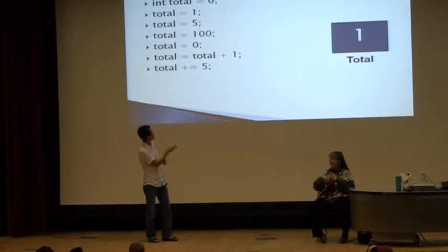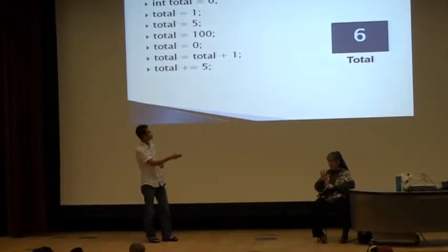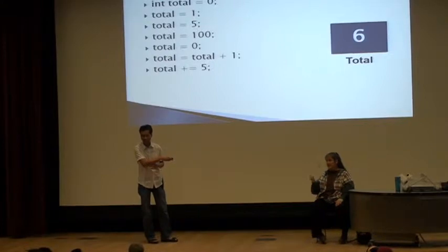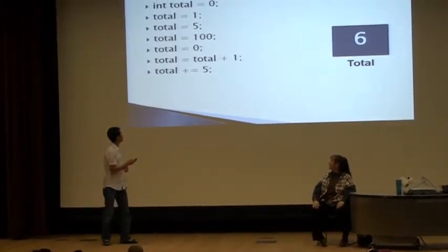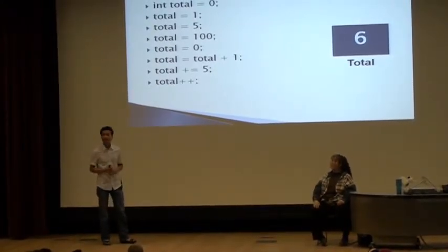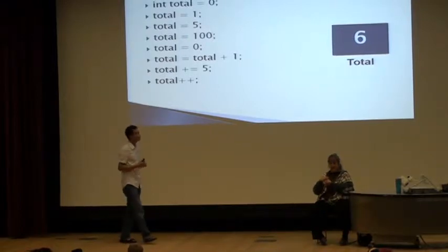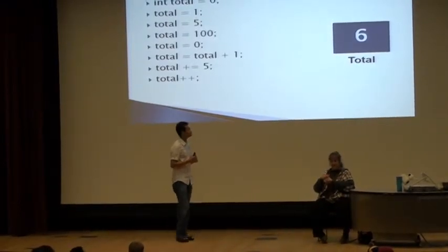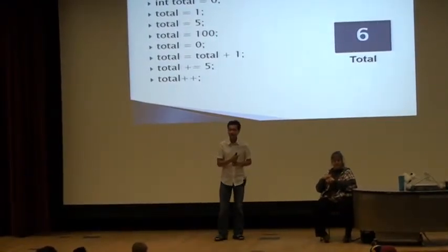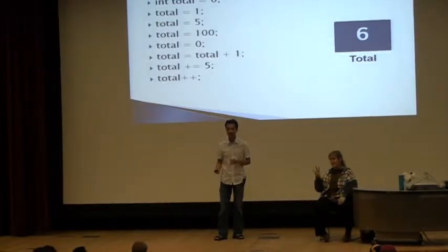Well, it starts at one. One plus five, so six. So now we're going to put six into total. Now we've got total plus plus. So what's the value of total now? Seven.